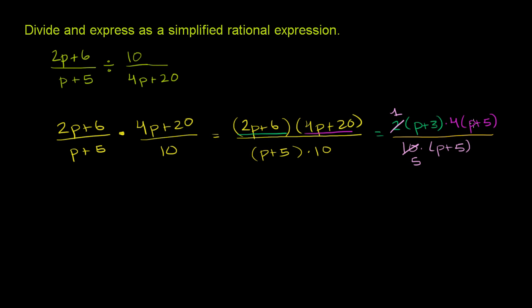And then we can also divide the numerator and the denominator by p plus 5, assuming that they're not equal to 0, assuming that the expression is not equal to 0, or that p does not equal negative 5. So if we divide the numerator and denominator by p plus 5, these guys cancel out.